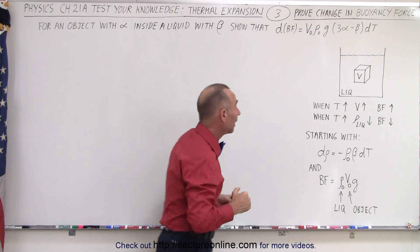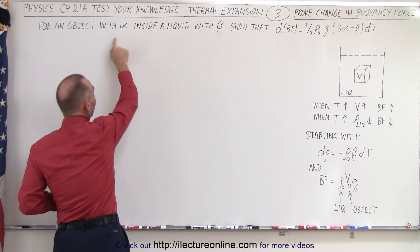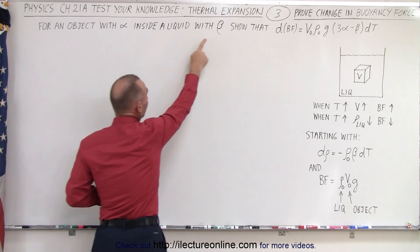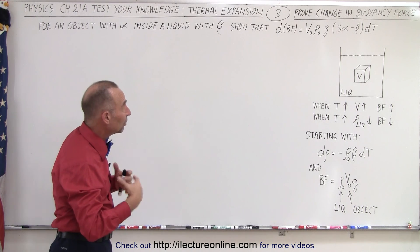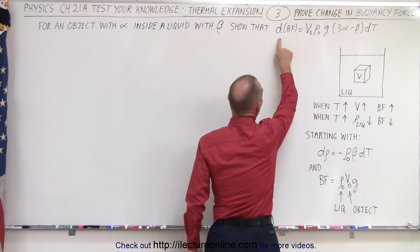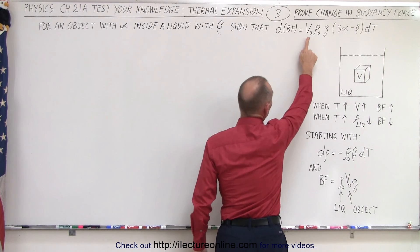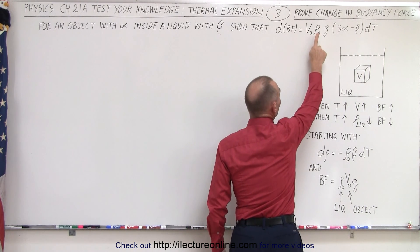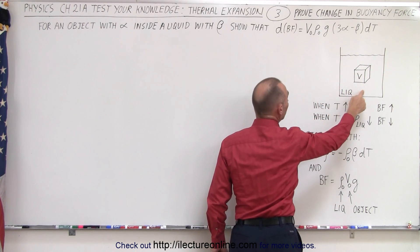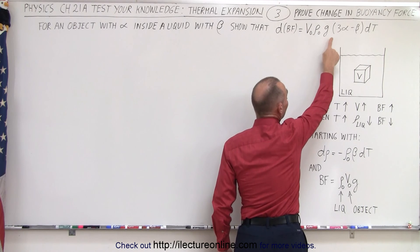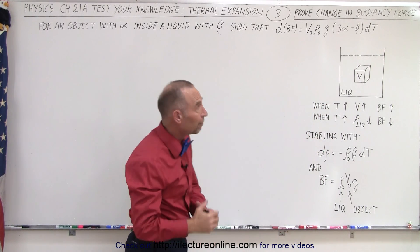So the question now is: if we have an object that has the linear coefficient of expansion alpha, and it's inside a liquid that has a volume coefficient of expansion beta, we need to show that the differential of the buoyancy force is going to be equal to the initial volume times the initial density of the liquid times G times (3 alpha minus beta) times the differential in the temperature.